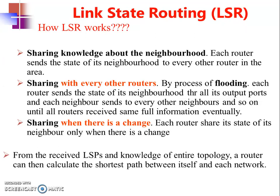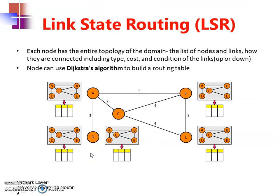Now how does link state routing work? There are three key points. First, sharing knowledge about the neighborhood to each and every router in the area is done at the first instant through a process called flooding. Sharing is done whenever there is a change or new information, and the router shares that information to all routers in the network through flooding using link state packets, or LSPs.